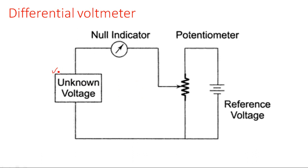In the circuit, the unknown voltage to be calculated is connected on the left side of an ammeter. A reference voltage — say 1 volt — is connected across a potentiometer, and the potentiometer output is connected to the other side of the ammeter. When the voltage from the potentiometer equals the unknown voltage, the currents from both sides flow in opposite directions, cancel each other, and the ammeter shows zero deflection — a null indication.